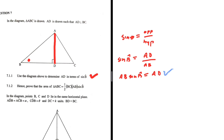Let's verify 7.1.1: sine of B equals the opposite AD divided by the hypotenuse AB. To find AD we cross-multiply — that seems correct. Now let's do 7.1.2: hence prove that the area of triangle ABC equals ½·BC·AB·sin(B).